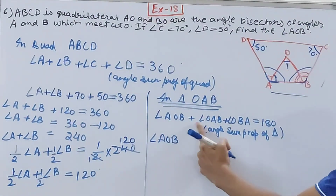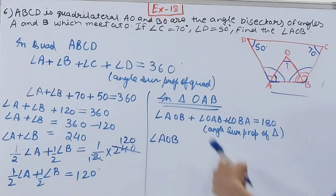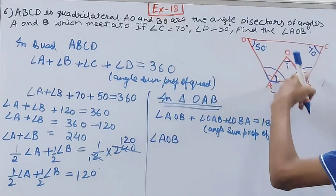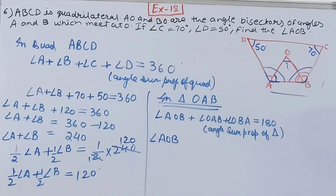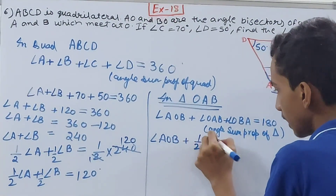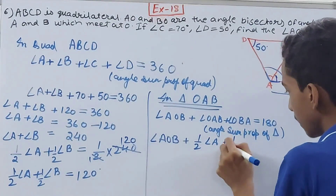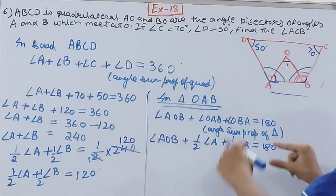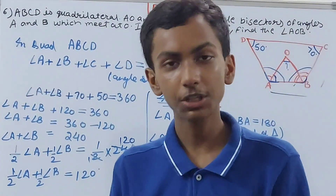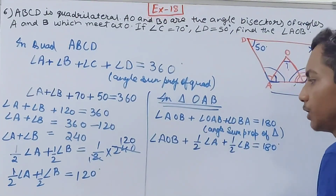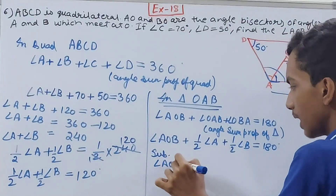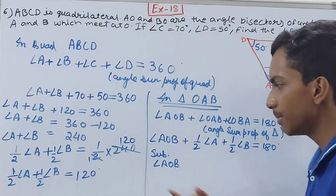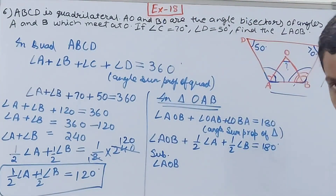Angle AOB is what we need to find, so we leave it. Angle OAB is half of angle A, and angle OBA is half of angle B. So we can write: angle AOB plus half angle A plus half angle B equals 180 degrees.